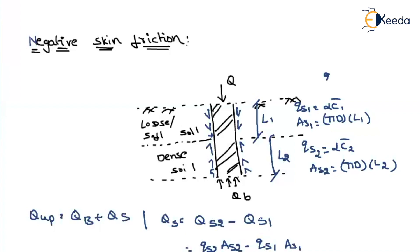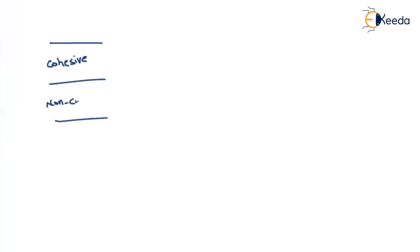Now, in which cases does negative skin friction occur? If you are placing cohesive soil over non-cohesive soil, then as the load is applied, the cohesive soil will get consolidated. As it consolidates, it will develop negative skin friction.